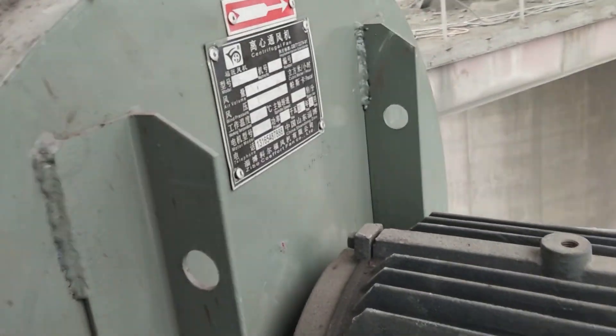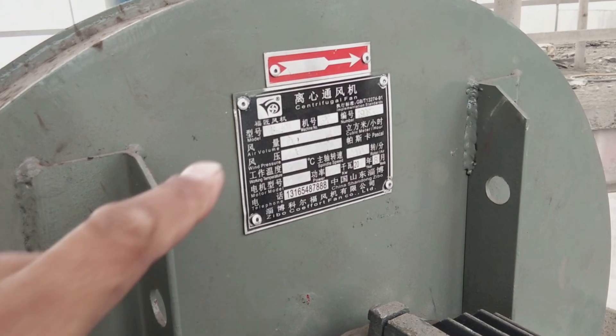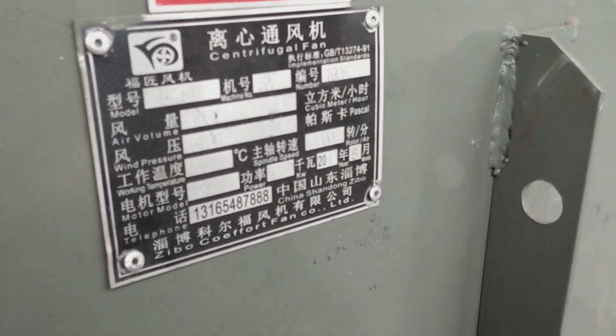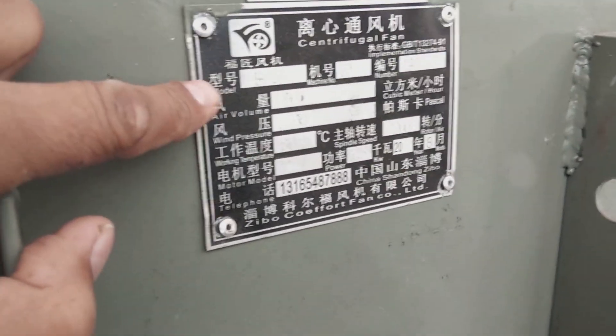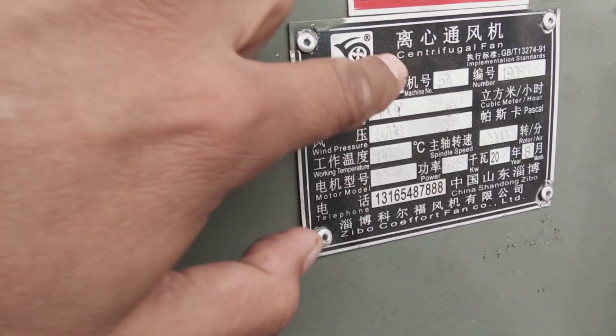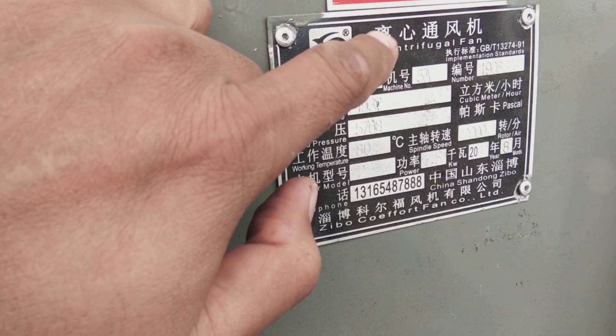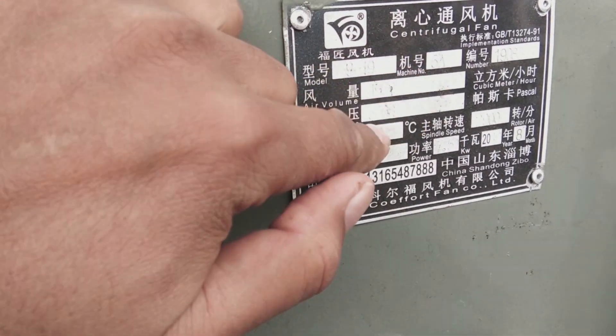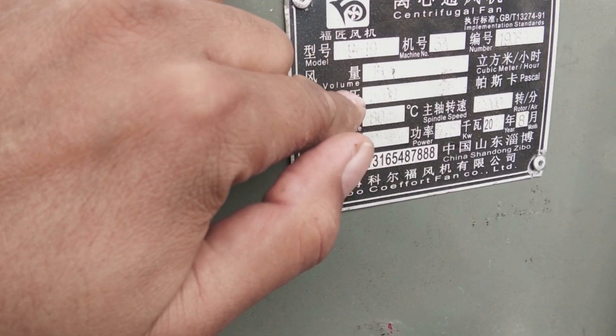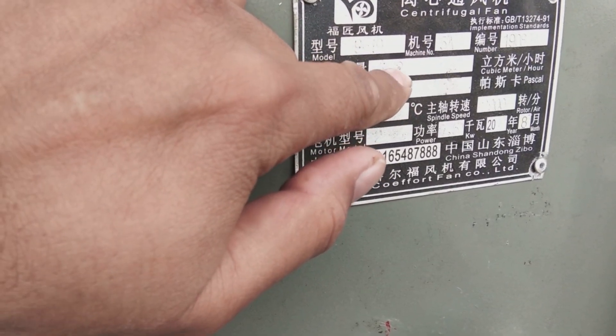These air slide fans are very common in industry. I'll show you some details of this one. Here you can see the mechanical side nameplate. This is the model number, and this is a centrifugal fan. It's Chinese made, and here's the manufacturer date.